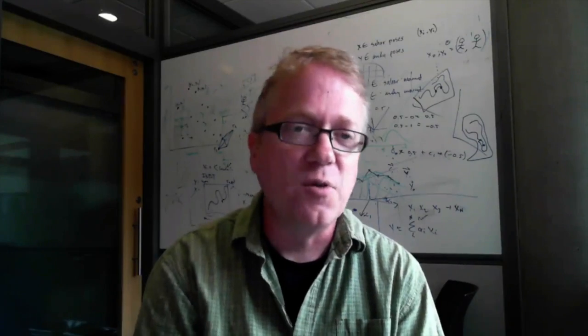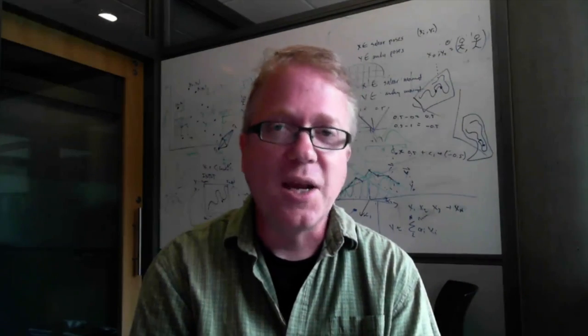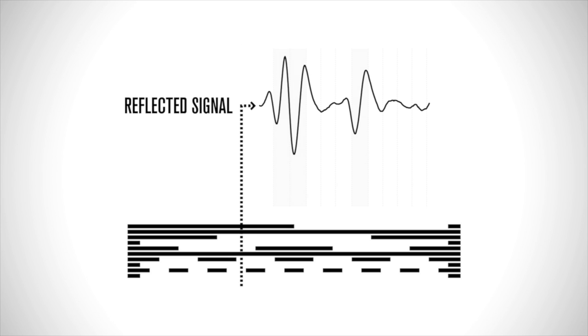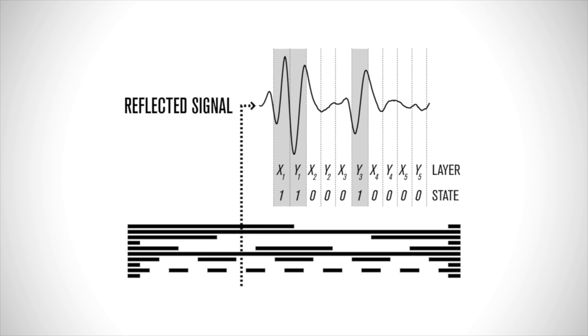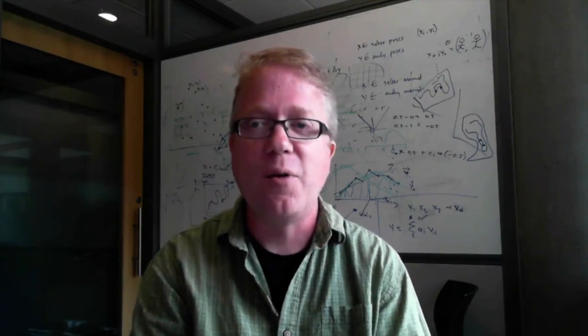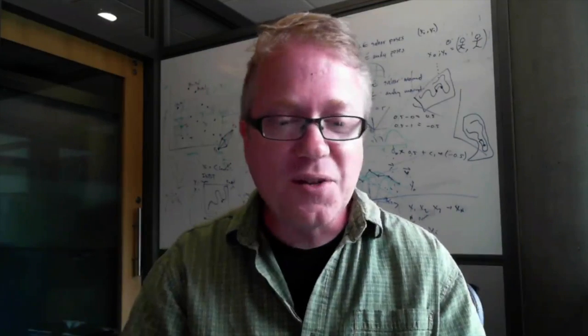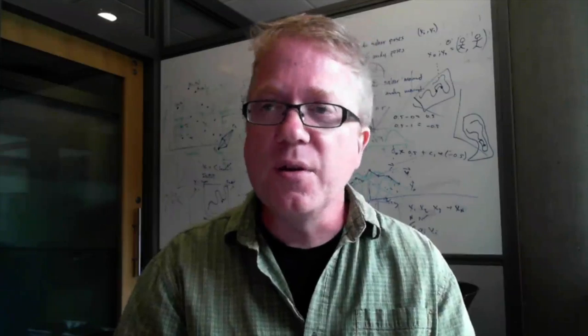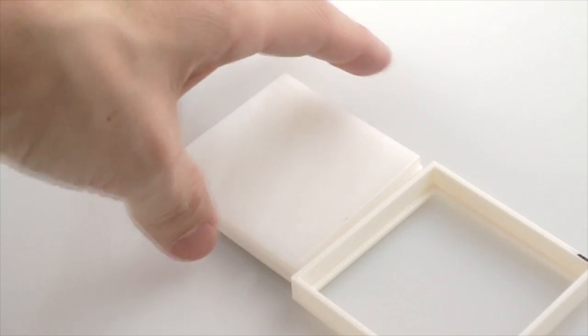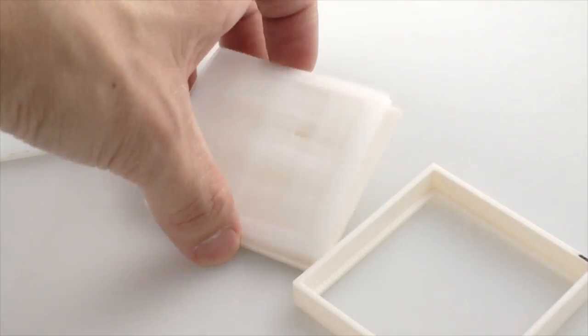Another application would be embedding what's called a gray code in the object. That's a particular binary pattern which varies over the surface of the object. When you recover the binary pattern, you actually know exactly where you are in the binary pattern. There are limits to what you can do — we found the approach worked best when you had material interfacing with a void or an air pocket within the material.